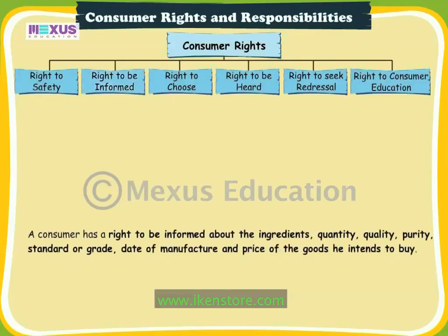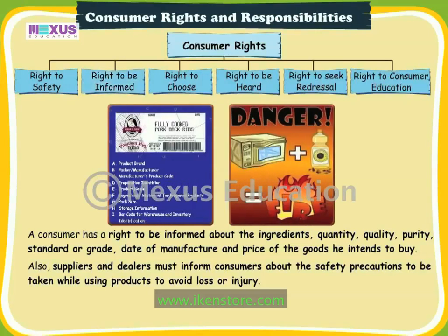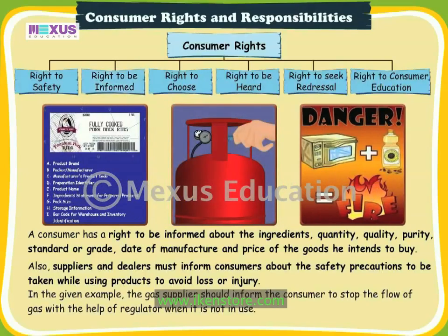Right to be informed: a consumer has a right to be informed about the ingredients, quantity, quality, purity, standard or grade, date of manufacture, and price of the goods he intends to buy. Suppliers and dealers must also inform consumers about the safety precautions to be taken while using products to avoid loss or injury. For example, the gas supplier should inform the consumer to stop the flow of gas with the help of a regulator when it is not in use.